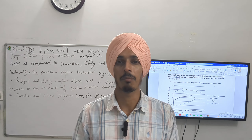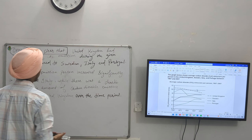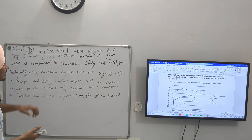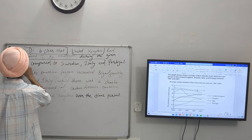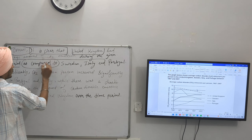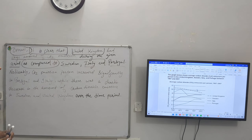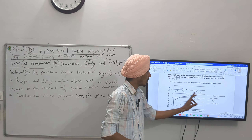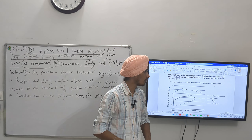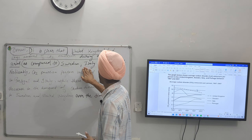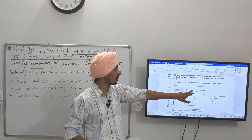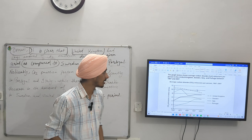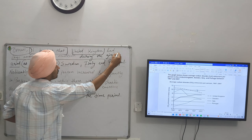Overall, it is clear that United Kingdom had a large amount of CO2 emission during the given period as compared to Sweden, Italy and Portugal. As you can see on the chart, United Kingdom had a large amount of CO2 emission compared to the other three countries. This is how I have discussed the first point in one sentence.